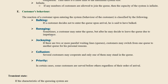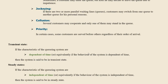Reneging is when a customer enters the queue but later decides to leave due to impatience. Jockeying occurs in a multi-server situation where a person standing in one queue decides to jump to another queue to get faster service. Collusion is when several customers cooperate and only one of them stands in the queue on behalf of the others. Priority means certain customers are served before others regardless of their order of arrival.